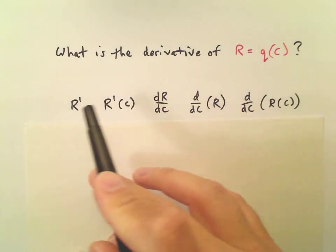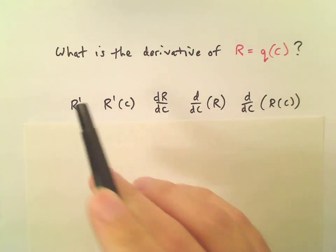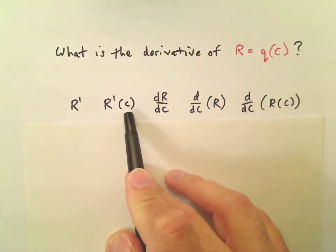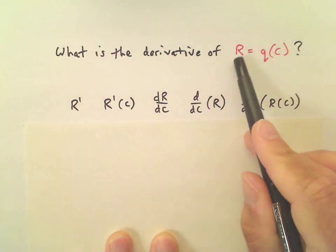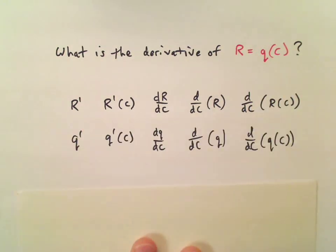Everywhere you see an r, that's where we saw y the first time around. Everywhere you see a c, that's where we had an x the first time around. Similarly, r and q will be interchangeable. So there's your other set of expressions right there.